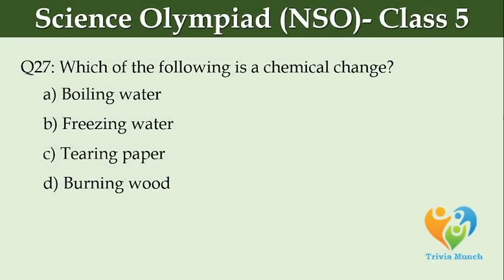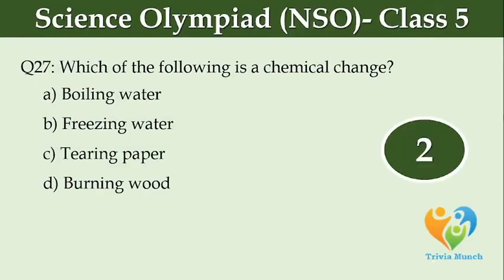Which of the following is a chemical change? Option A, boiling water. Option B, freezing water. Option C, tearing paper. Option D, burning wood.